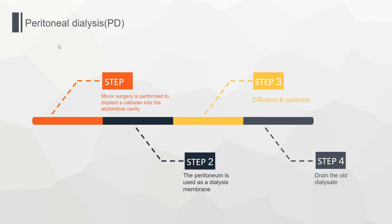Peritoneal dialysis has four major procedures. First, we put the catheter into the abdominal cavity by minor surgery. Next, we utilize the peritoneum as a semi-permeable membrane to perform diffusion exchange. And last, we eventually remove the unnecessary water and waste.